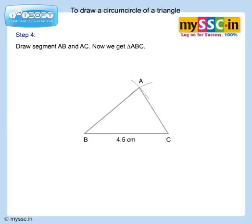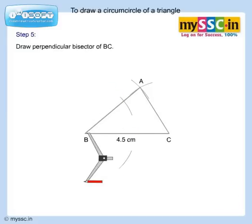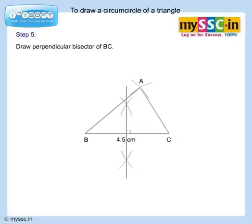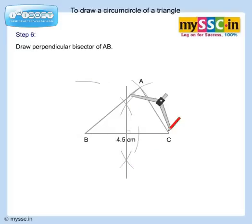Now we get triangle ABC, which is the required triangle. Draw the perpendicular bisector of BC. Draw the perpendicular bisector of AB.